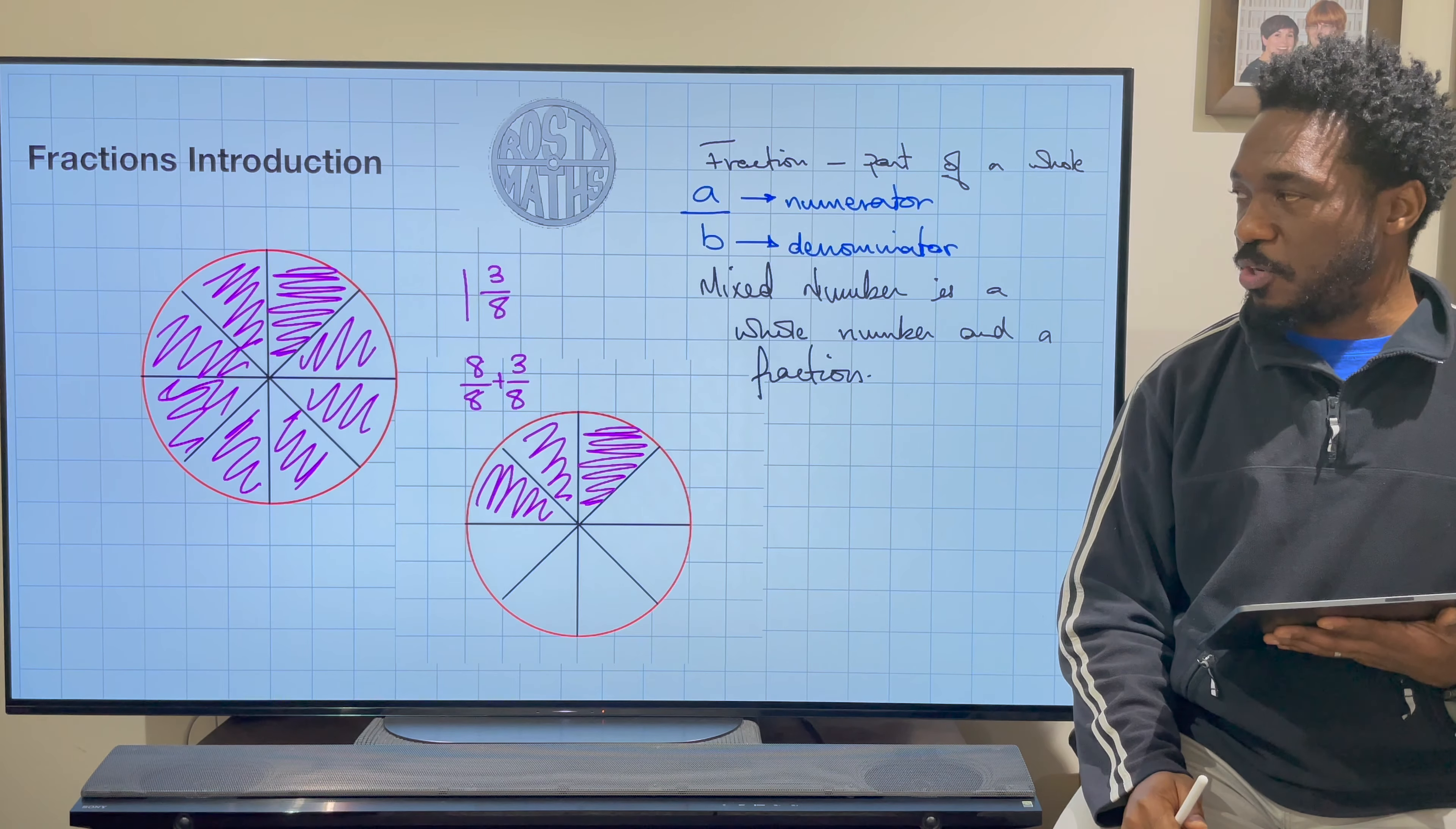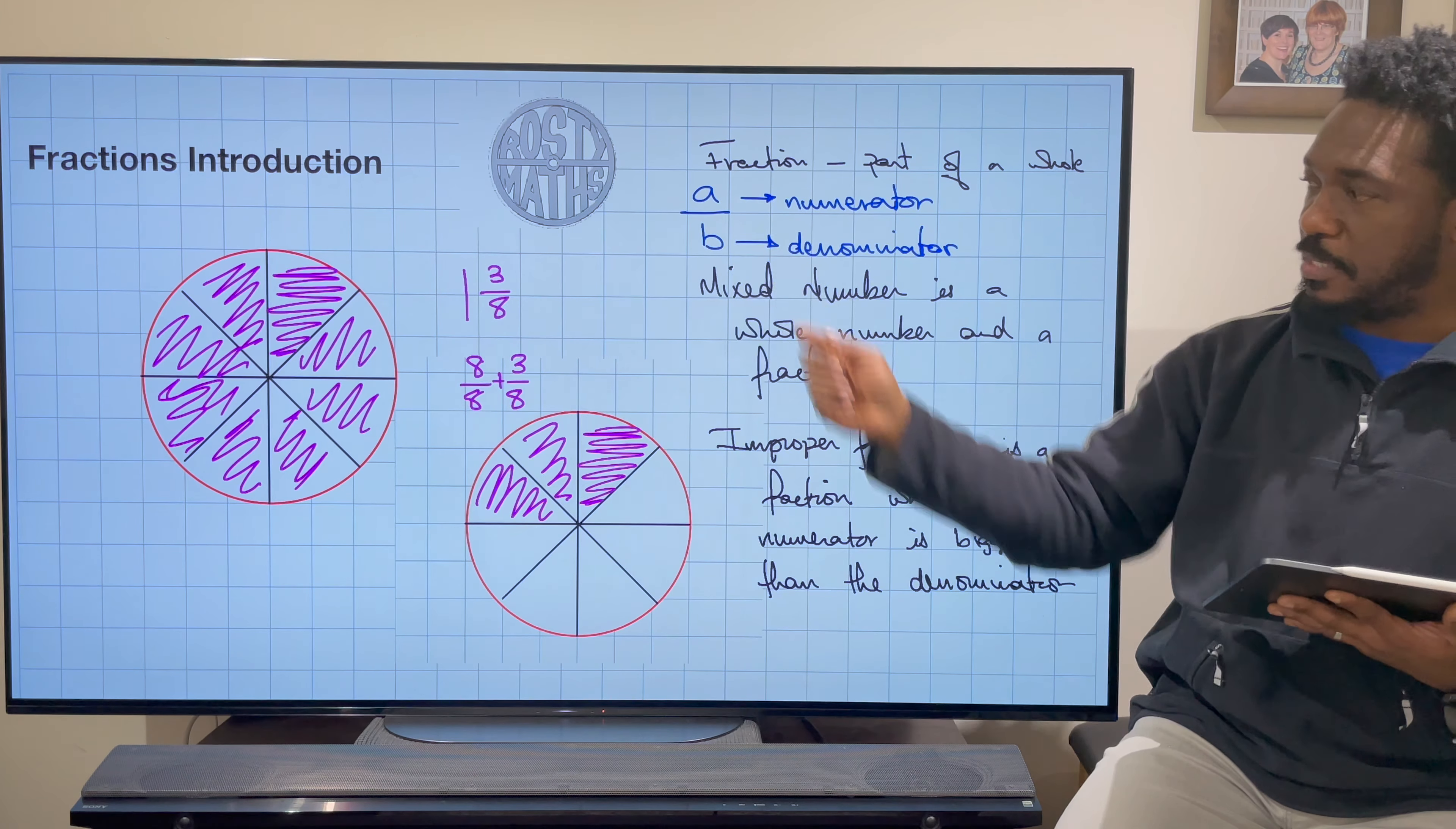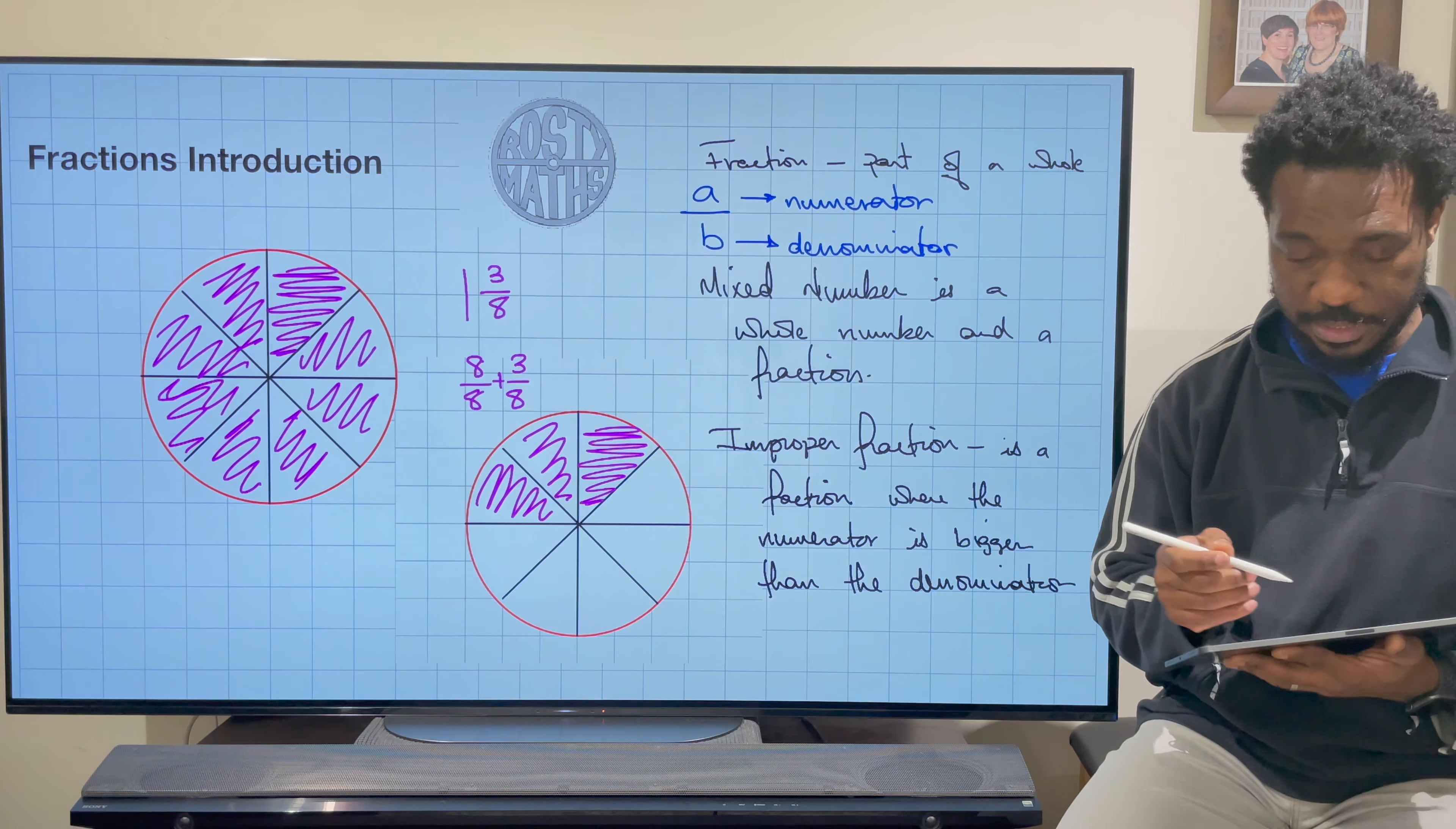Last of all, to finish off our fraction introduction in this video is what is called an improper fraction. So let's get that down. So improper fraction. And what is an improper fraction? It's a fraction, not a mixed number. It's a fraction, but the numerator is bigger than the denominator. And I'm going to use exactly the same pizzas I've just had. So let me show you what that means now. In the grand scheme of things, if I want to write an improper fraction for how many slices I've eaten, that's exactly what I'm going to write. I'm going to write how many slices I've eaten out of an eight sliced pizza. So let's have a look and see.